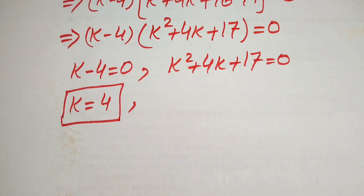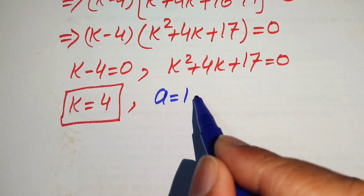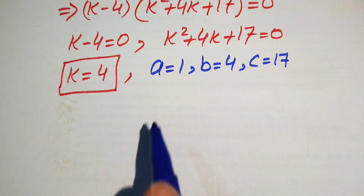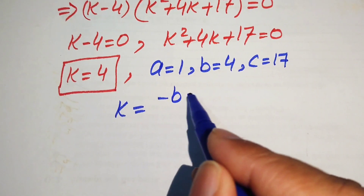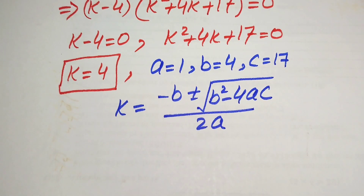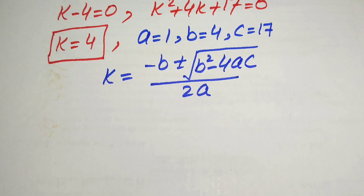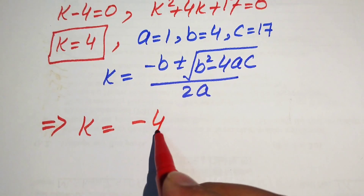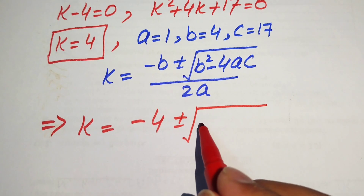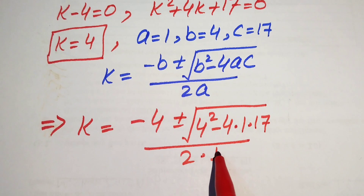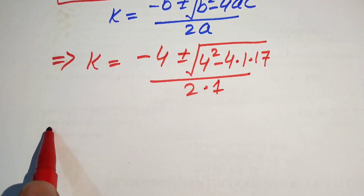Using the quadratic formula k equals (minus b plus or minus square root of b squared minus 4ac) divided by 2a, we substitute a equals 1, b equals 4, c equals 17. This gives k equals (minus 4 plus or minus square root of 4 squared minus 4 times 1 times 17) divided by 2 times 1.